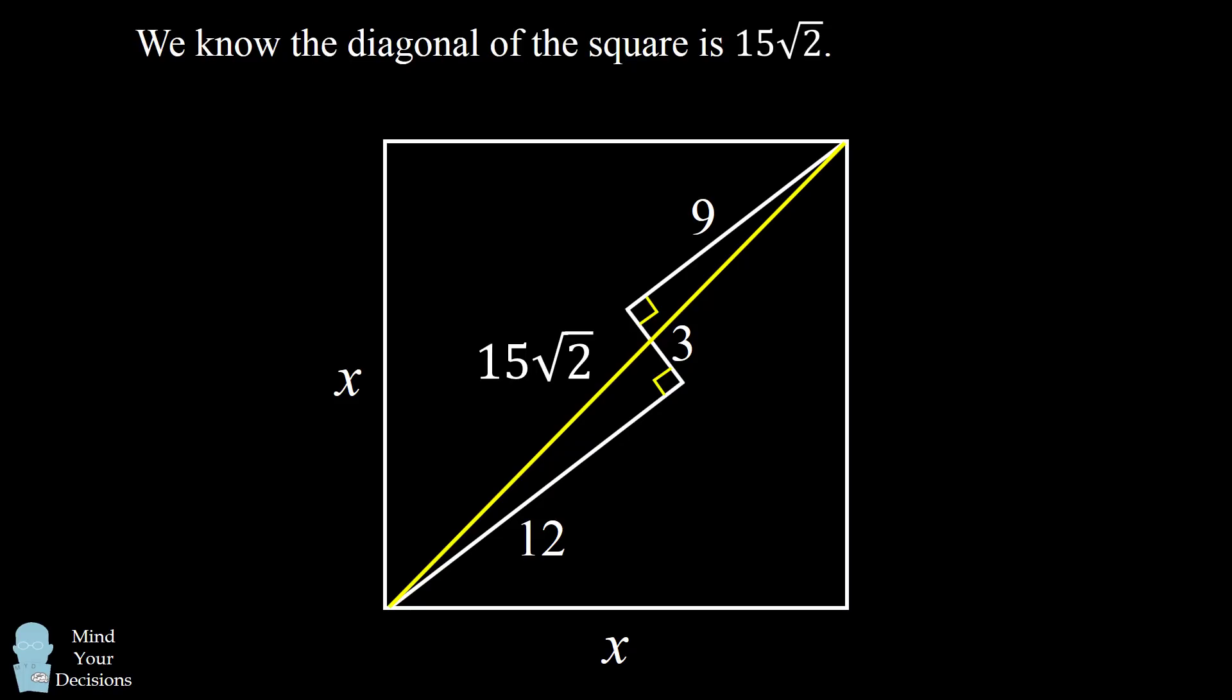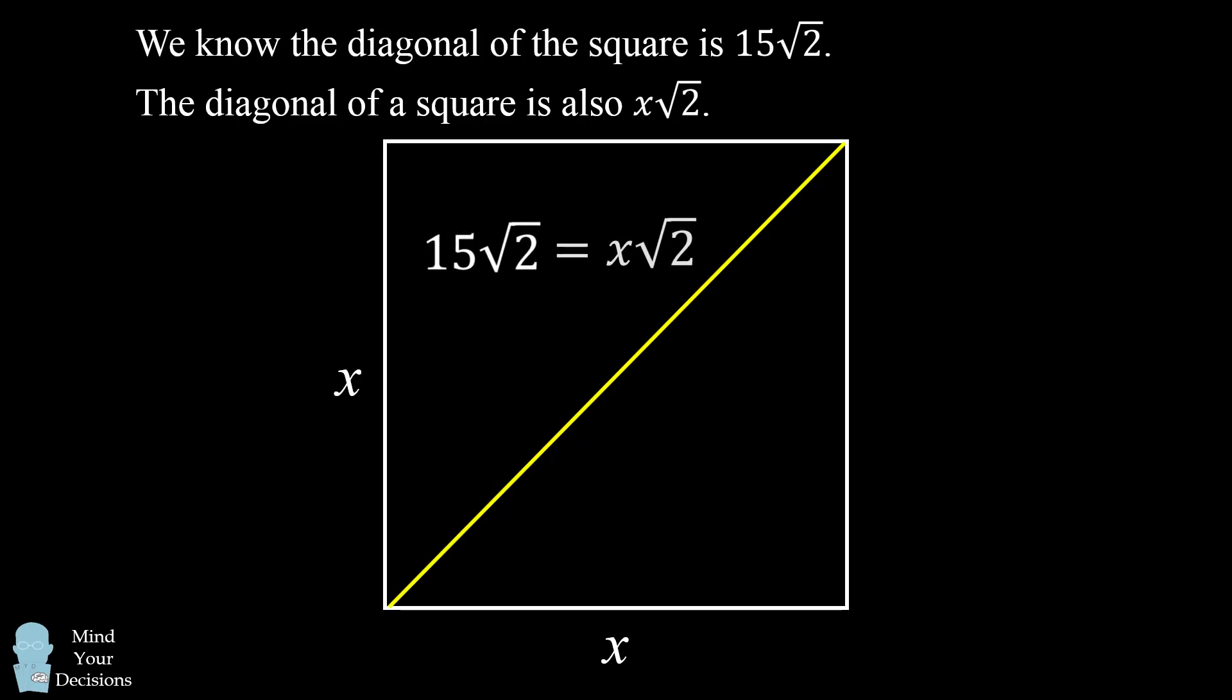We know the diagonal of the square is 15 square root of 2. That's what we calculated. And now we also know that the diagonal of the square is x times the square root of 2. This is because the diagonal of the square is the hypotenuse of a right triangle with two legs that are each x. So we can set 15 square root of 2 to be x times the square root of 2. And we can solve that x is equal to 15. And that's our answer.